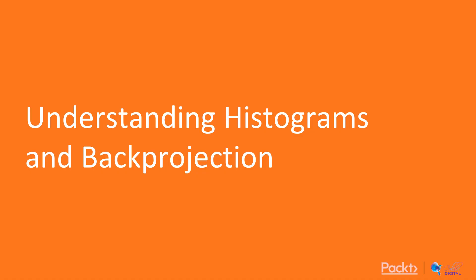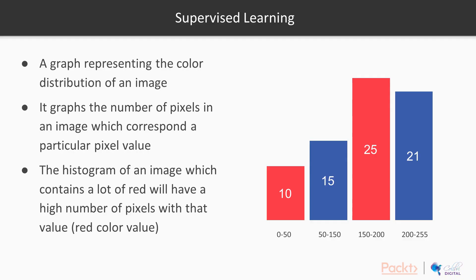Let's get started and try to understand how histograms and back projection can help us detect objects using only their color. Simply put, a histogram is a graphical representation of the color distribution in an image. It plots the number of pixels in an image which correspond to a particular pixel value.